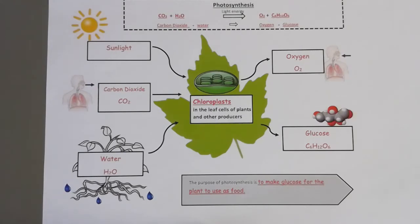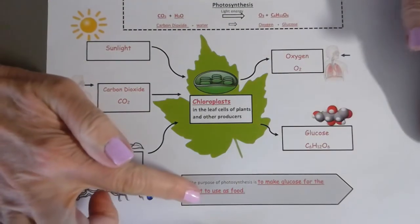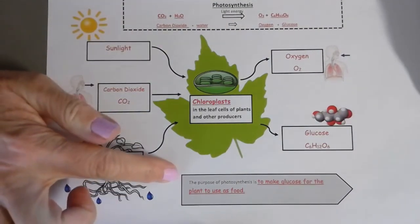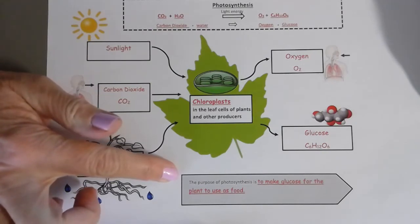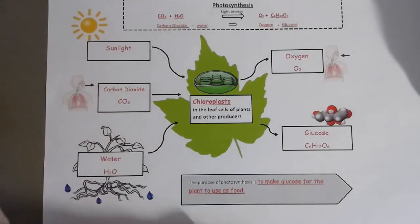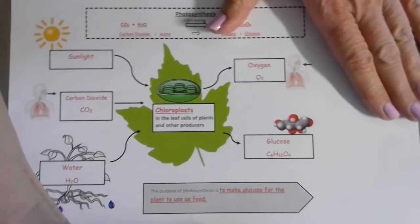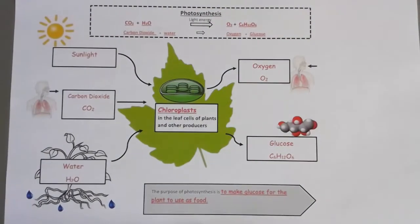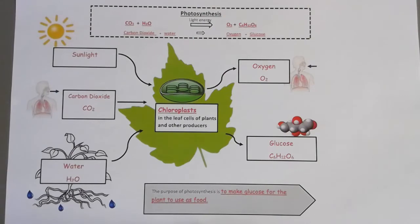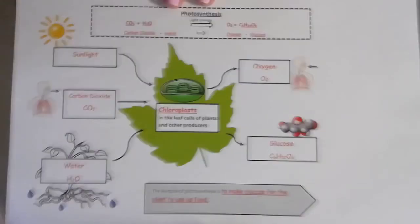Photosynthesis is an important part of our life processes because it allows life on earth. Photosynthesis is the process where plants make their own food. On your note taker, the first thing I'd like you to do is complete the definition for photosynthesis. The purpose of photosynthesis is to make glucose for the plant to use as food.